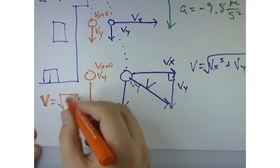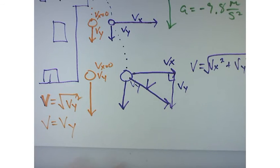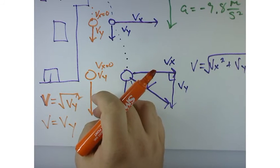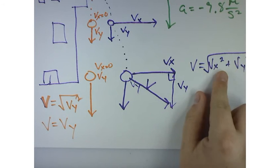By the way, what is the square root of v y squared? V y. So, my velocity of this, the total velocity, is v y, and that makes sense, right, from a practical perspective, because it's not moving in the x direction. But this one is v y squared plus whatever we have in the x direction, so this would be more.